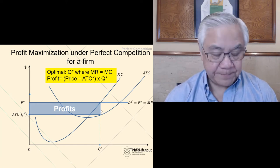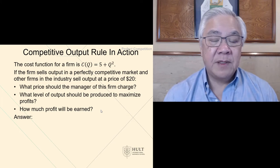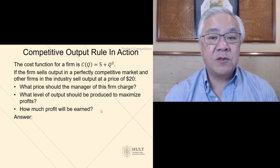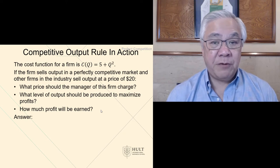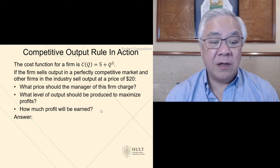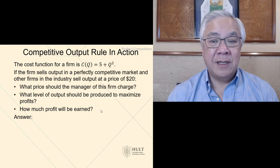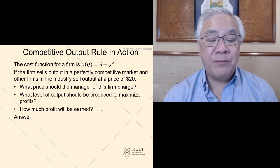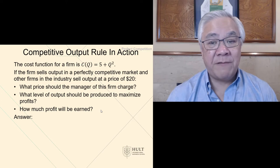Here is a cost function for a firm. The cost of a given quantity equals 5 plus Q squared. And the firm is in a perfectly competitive market. And the price is set at $20. For question one, what price should the manager charge in this firm? Second is, what is the level of the output should be to maximize profits? And finally, what is the amount of profits earned?